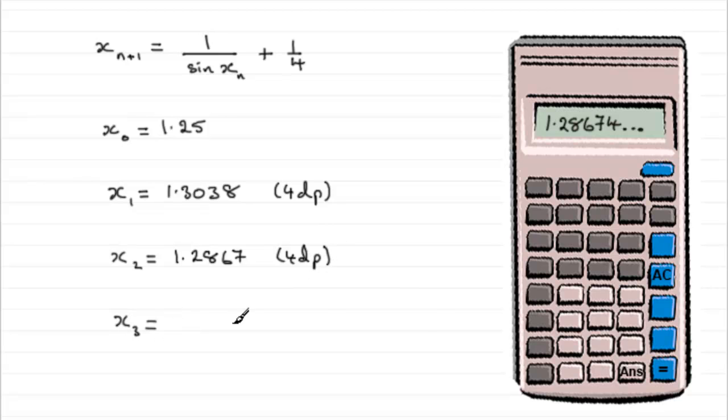And finally to get x3, just press equals one more time. And again, if you do that, you'll get this result, which to four decimal places is going to be 1.2917. And so there they are, the three other approximations to the root.